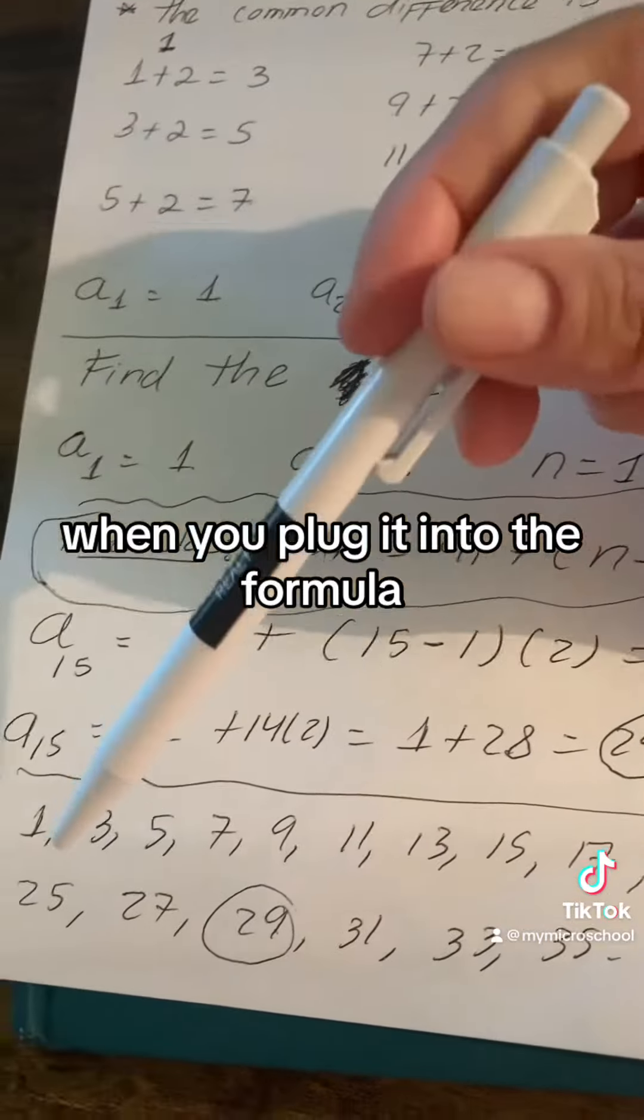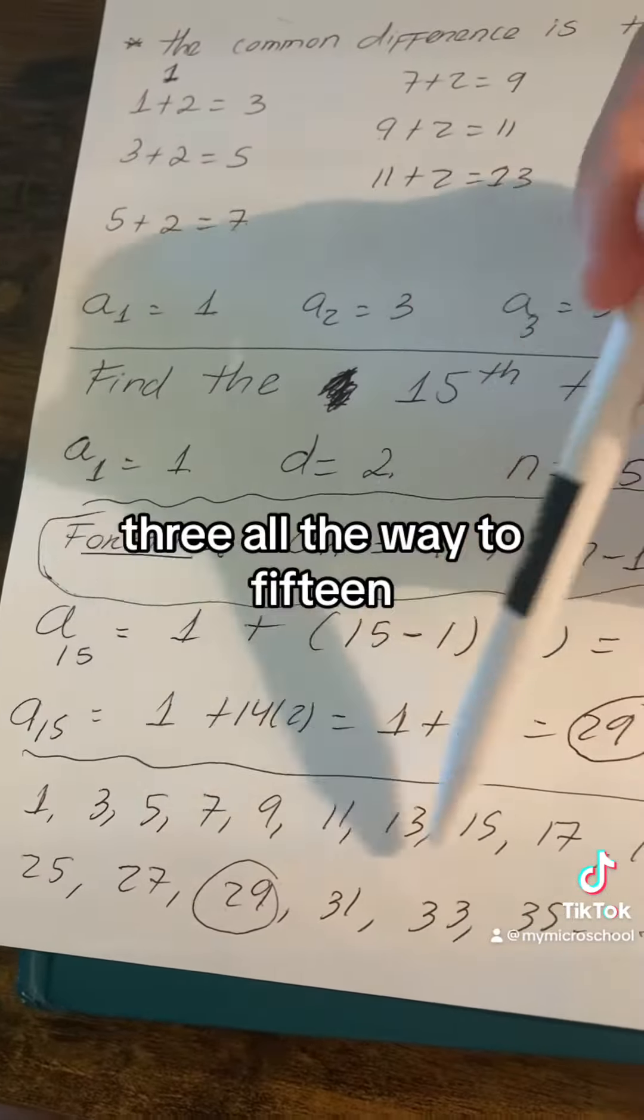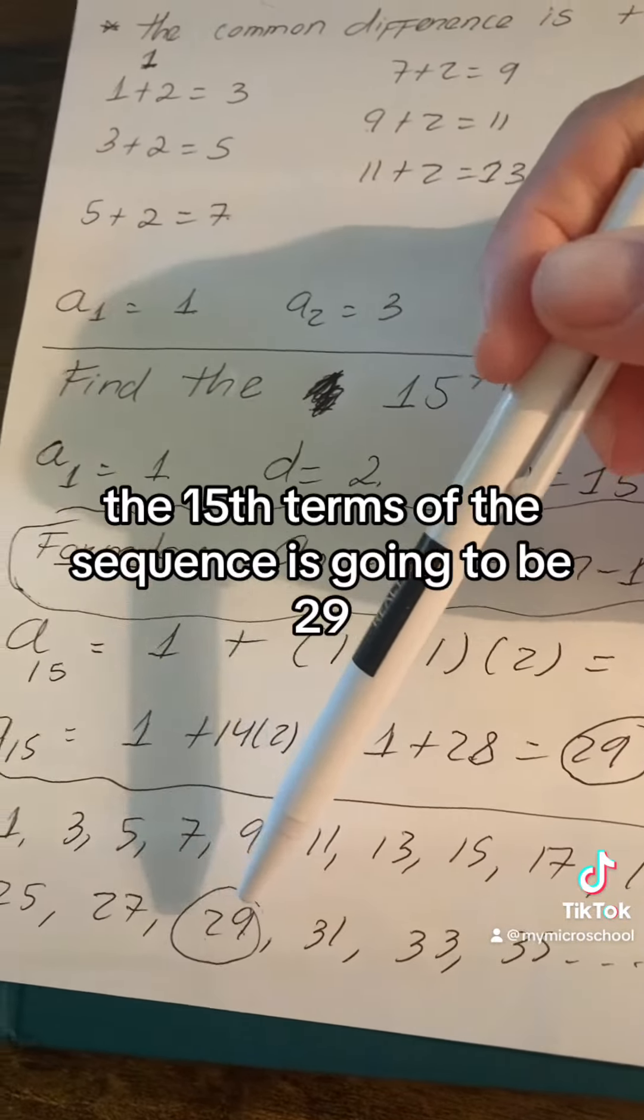When you plug it into the formula and then you can test it and you'll see that if you go 1, 2, 3, all the way to 15, the 15th term of the sequence is going to be 29.